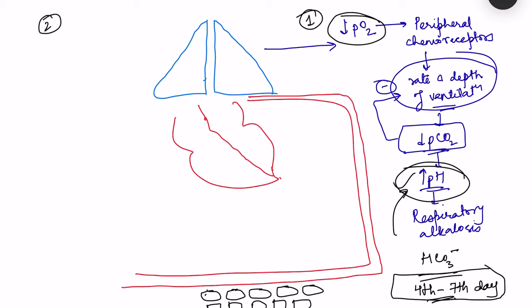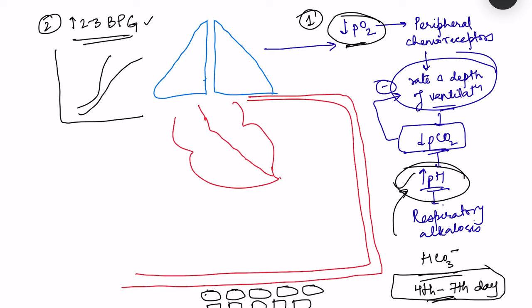Second, because of the decrease in partial pressure of oxygen, the metabolism in red blood cells changes such that there is an increase in 2,3-BPG. From the oxyhemoglobin dissociation curve, 2,3-BPG shifts the curve to the right. When the curve shifts to the right, there is an increase in the release of oxygen. At a given partial pressure of oxygen, the percentage hemoglobin saturation is much lower compared to the original curve.